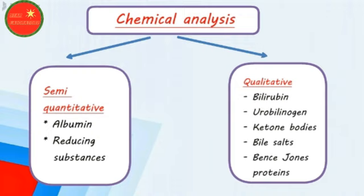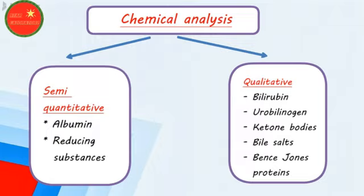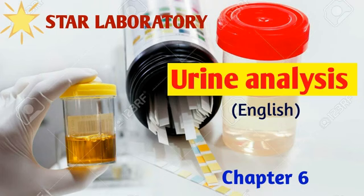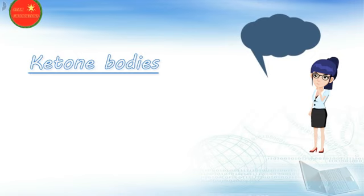We also include ketone bodies, bile salts, and Bence Jones proteins. Today we are going to discuss about the ketone bodies and their identification in the laboratory — what ketone bodies are, how they appear in the urine sample, and how they can be diagnosed in the laboratory.